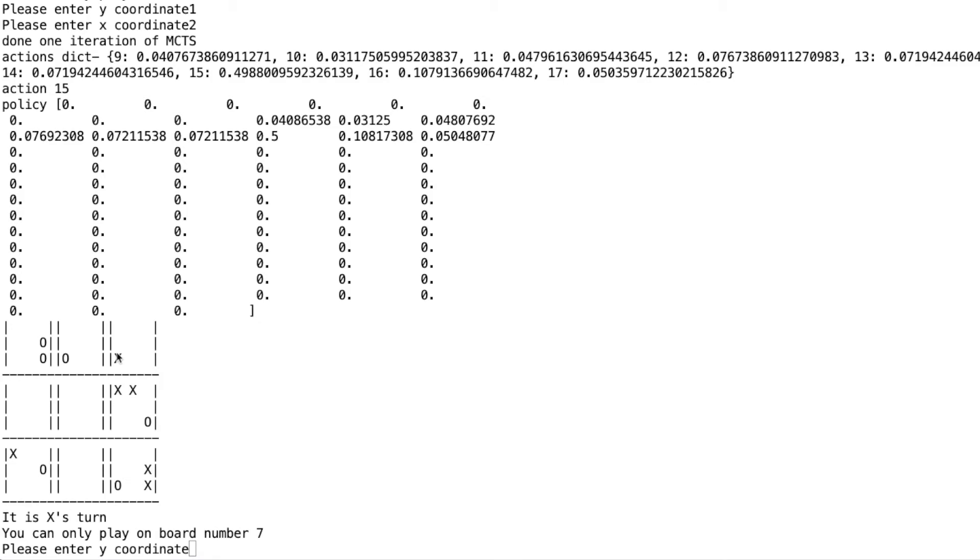So I just let it train for a while and eventually got really good at ultimate tic-tac-toe. The best I can do against it is tie. Here I'm playing against a trained model. Right now it's just a command line version, but I'm going to get a nice UI up soon. So right now we have to play on board number seven, which is this one. These are numbered one, two, three, four, five, six, seven, eight, nine.